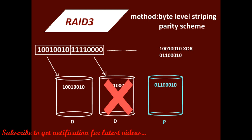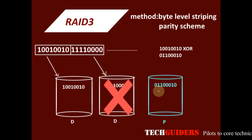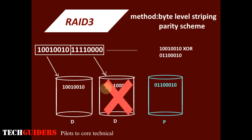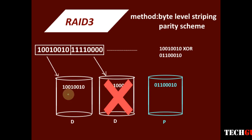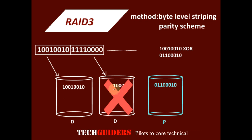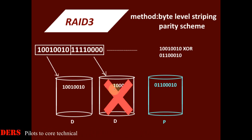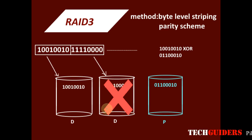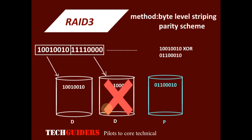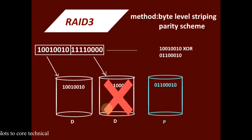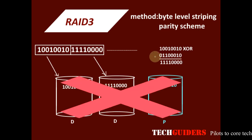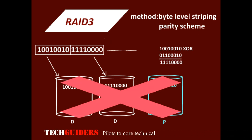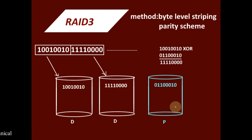Regarding performance, parity generation is not as complex as Hamming code generation. But since byte-level striping is used, for every block read and block write access all the data disks will be involved, so only one request can be serviced at a time. Handling multiple requests is not possible, making this level suitable only for long sequential reads and writes, not for random access. RAID 3 is also not commonly used. The minimum number of disks required for a RAID 3 setup is 3.